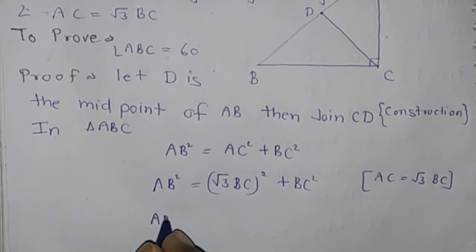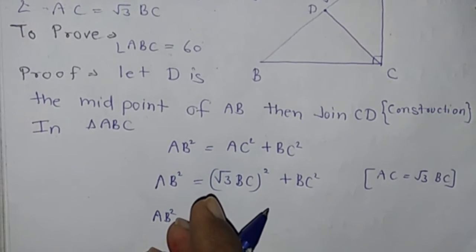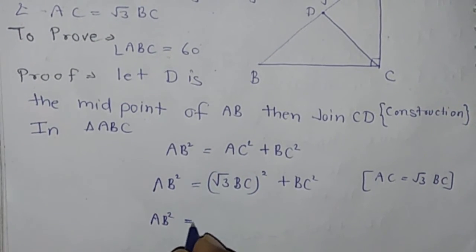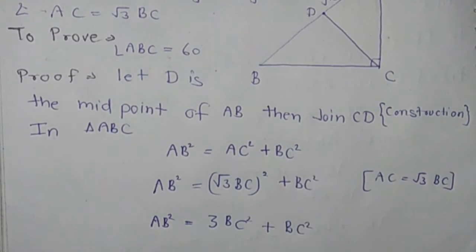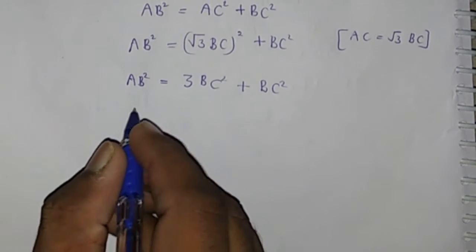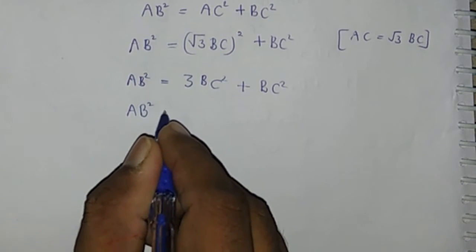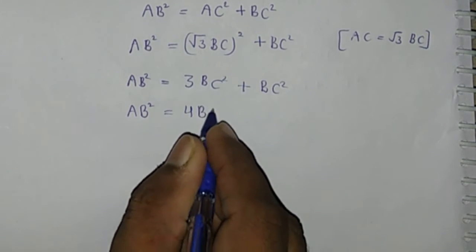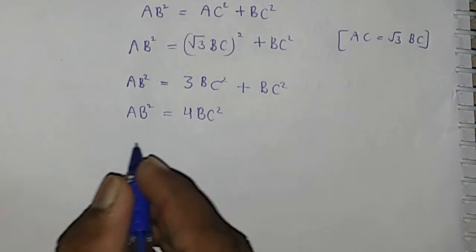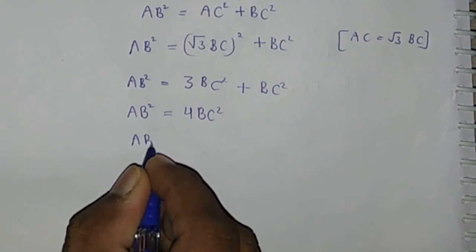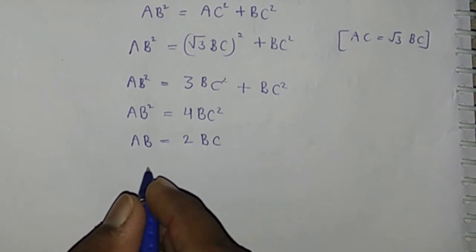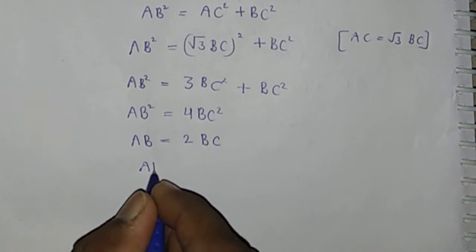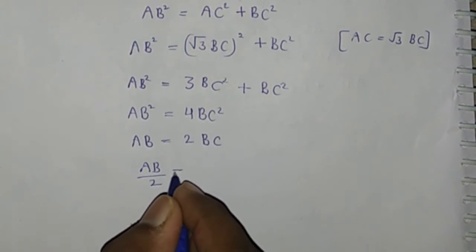AB square equals 3 BC square plus BC square. AB square equals 4 BC square. Therefore AB equals 2 BC, or AB divided by 2 equals BC.